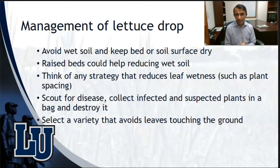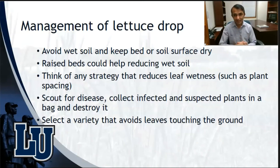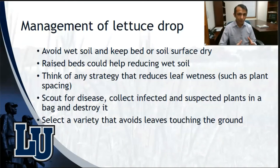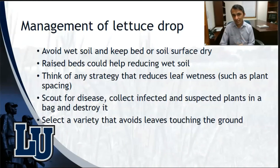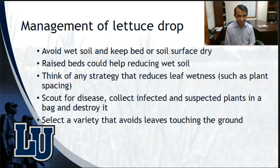You can also scout for disease in your farming system, which will allow you to identify the initiation of any new infection. Collect those infected plants at an early stage, put them in a bag, and destroy them so other healthy plants have a chance to thrive and you can harvest healthy lettuce. You should also consider varieties that avoid leaves touching the ground, because the pathogen can be on soil surfaces and invade leaf tissue through ground contact.